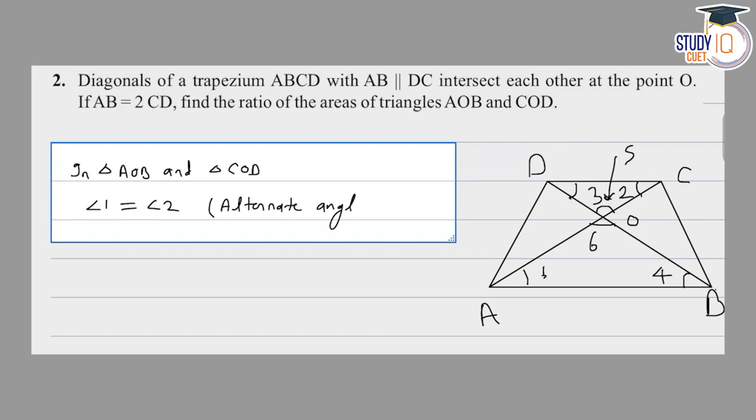Alternate angles. Then angle 3 and angle 4 are equal. These are also alternate angles.